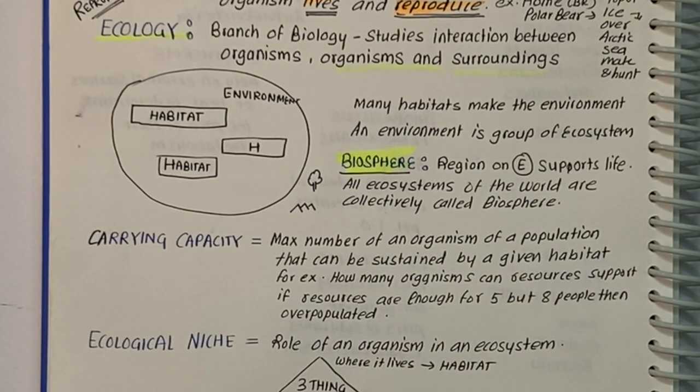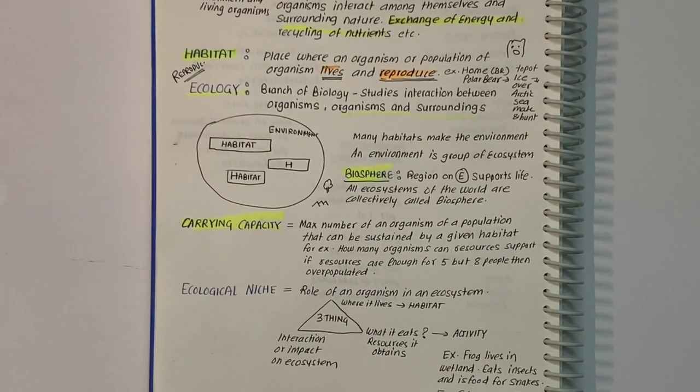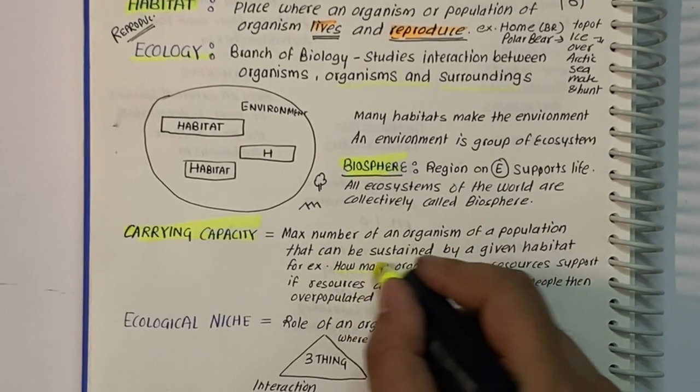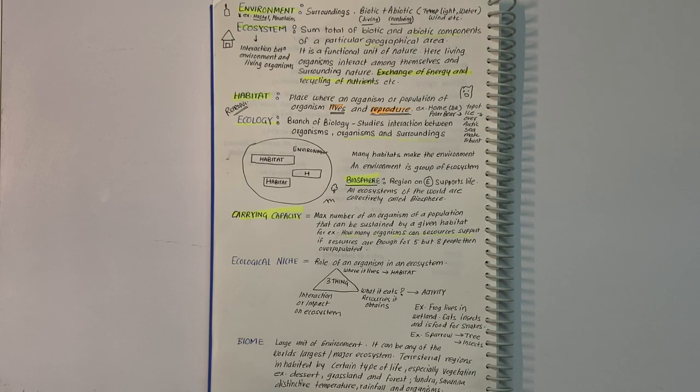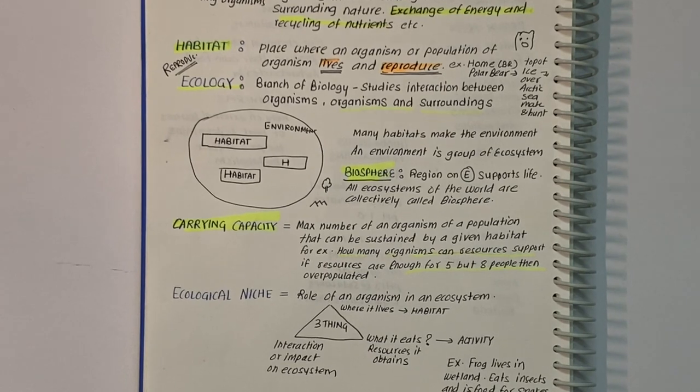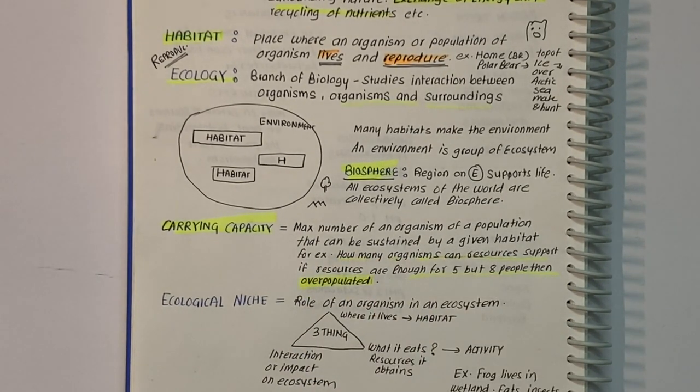Carrying capacity is the maximum number of organisms of a population that can be sustained by a given habitat. If resources are enough for 5 but there are 8 people, the habitat is overpopulated and beyond carrying capacity.